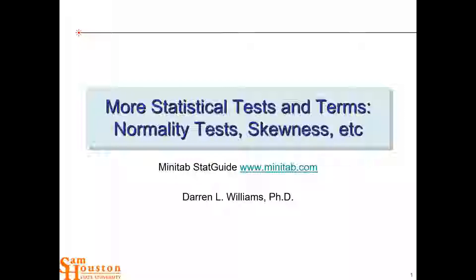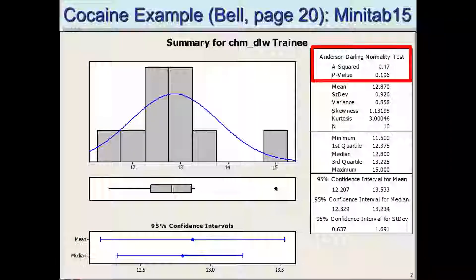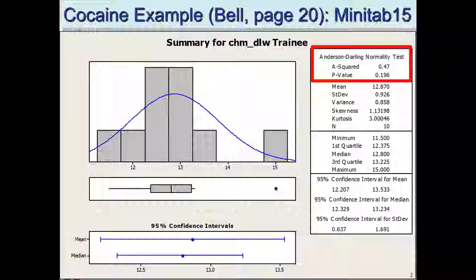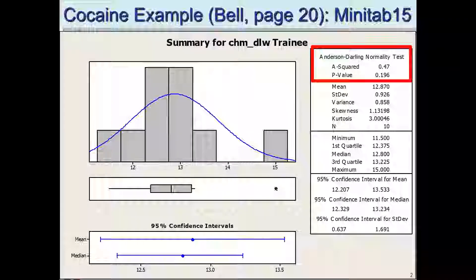So today we're going to talk about the normal distribution and various ways it can go wrong when looking at the data. When we get histograms of our data, we can look at those and see if they seem to represent a normal distribution or not.